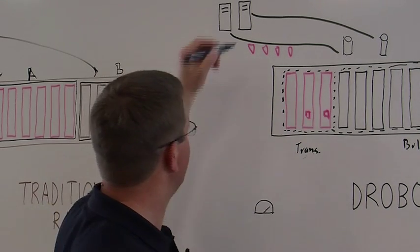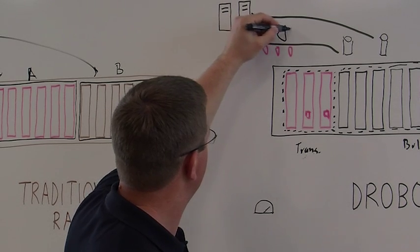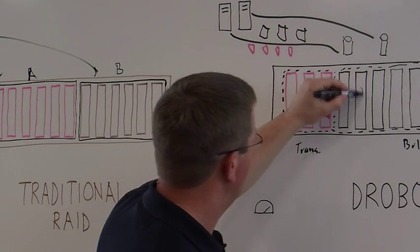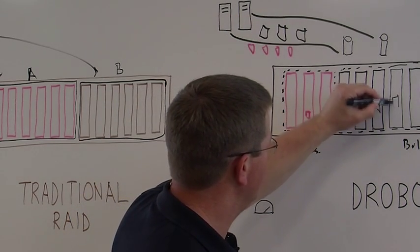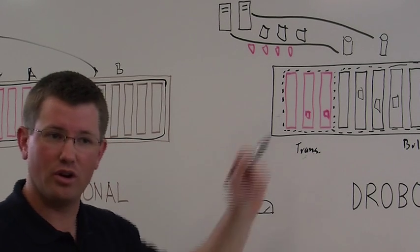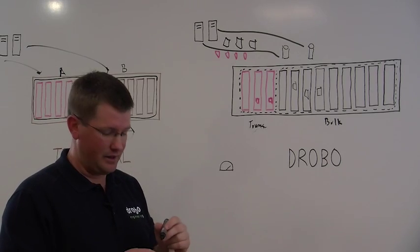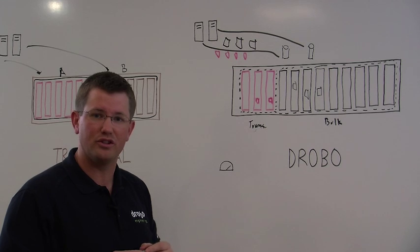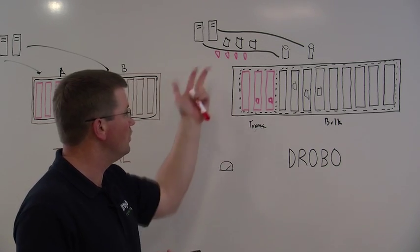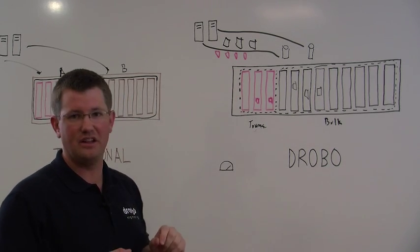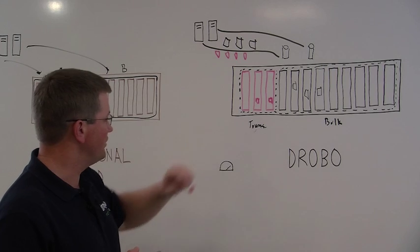Data that is streaming in nature, bigger IOs, more sequential IOs, will automatically go onto the bulk tier or onto the hard disk drives. And all of this happens automatically. So there's no knobs, no switches that you as the administrator have to do to be able to introduce these SSDs and start accelerating your transactional workloads.